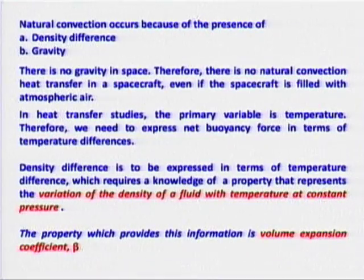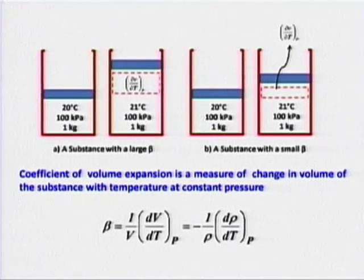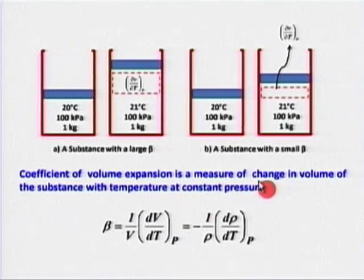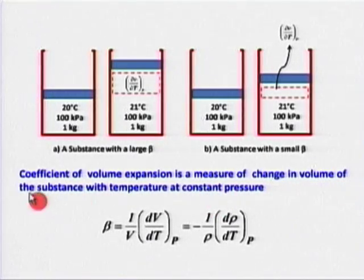Coming back, we need to characterize the temperature difference to density difference. For that we take recourse to what is called the coefficient of volume expansion. The coefficient of volume expansion is a measure of change in volume of a substance with temperature at constant pressure — that is, 1 upon V times dV by dT at constant pressure.